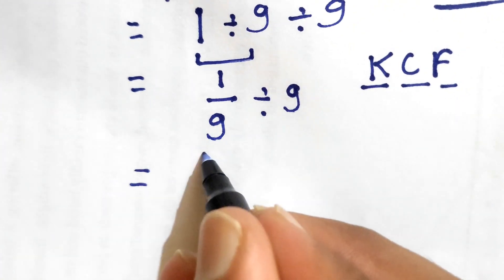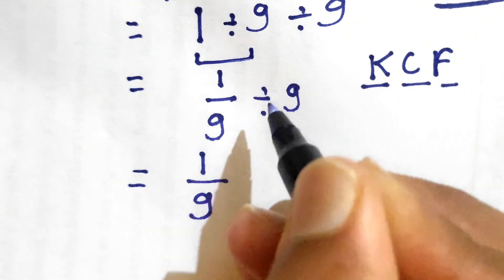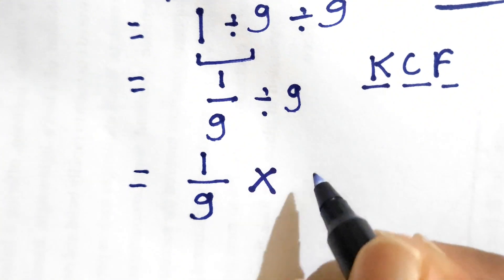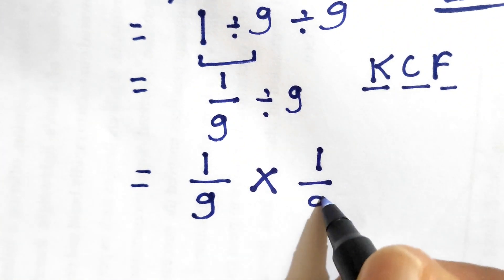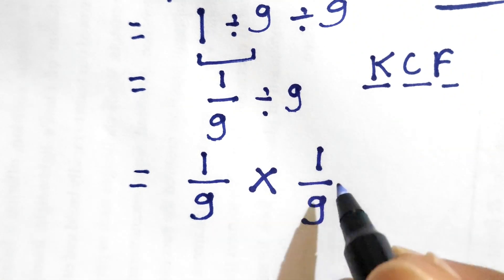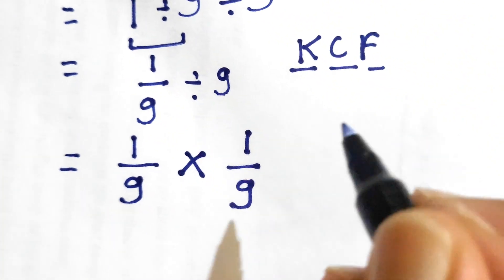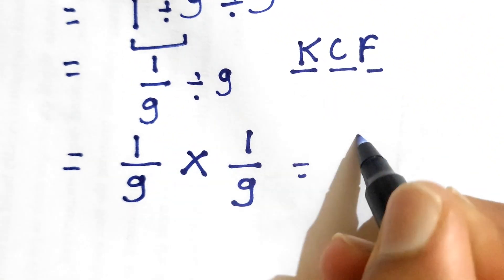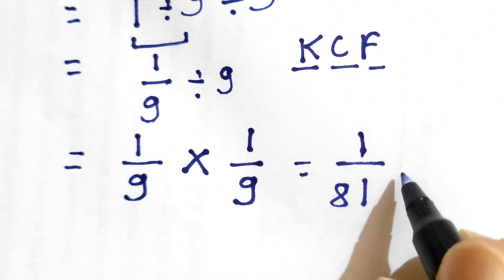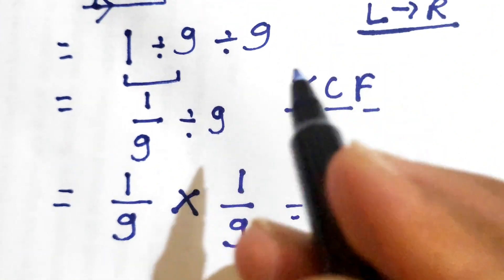We'll write 1 over 9 as it is, change the division sign into multiplication, and flip this 9, which gives us 1 over 9. So we have this expression: 1 over 9 times 1 over 9. This gives us 1 times 1 equals 1, and 9 times 9 equals 81. So 1 over 81 is the final correct answer for this expression.